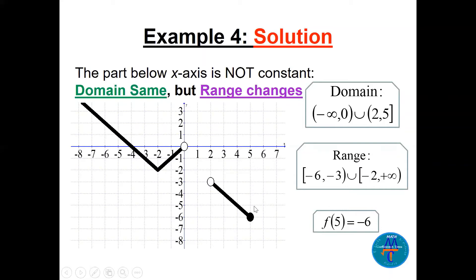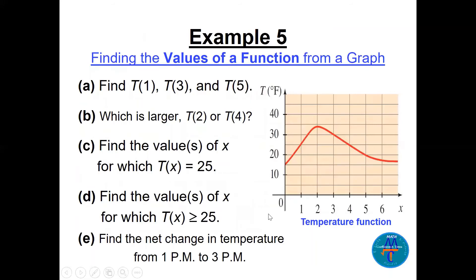Next example: a temperature function. We find t(1), t(3), and t(5). At x = 1 the temperature reads about 25 degrees; at x = 3 it reads about 30. We also determine which is larger, t(2) or t(4) — t(2) is larger on the temperature scale. The net change in temperature from 1 PM to 3 PM requires computing t(3) − t(1).